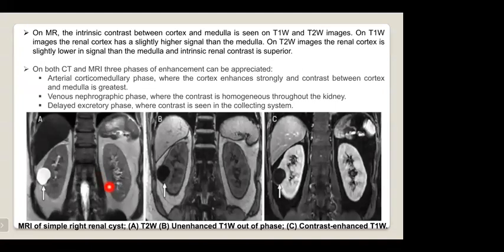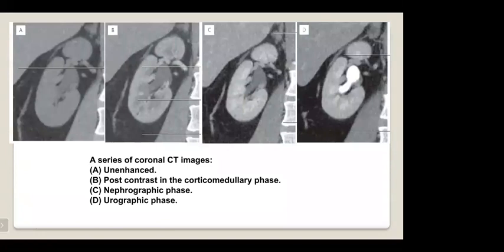This is an example of MRI of a simple renal cyst on T2-weighted images, enhanced T1 out-of-phase, and contrast-enhanced T1-weighted images. A series of coronal CT images is shown: unenhanced, post-contrast corticomedullary phase, nephrographic phase, and urographic phase.